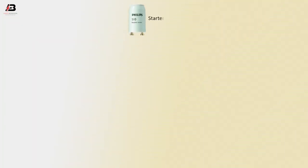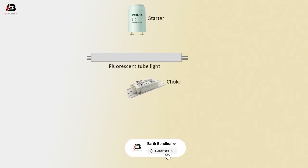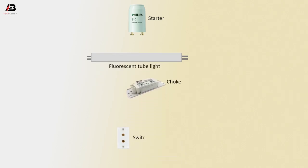So viewers, let's start. Fluorescent light starter. Fluorescent tube light. Electrical choke. Switch. Phase connection to switch.